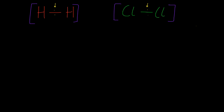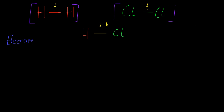But what if we have hydrogen chloride? Are the electrons in this bond in the middle? Well the answer is no — they actually lie more towards the chlorine. And why is that? That's because of a factor called electronegativity.